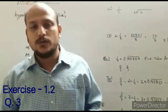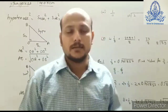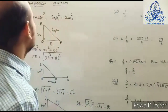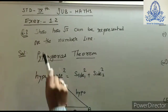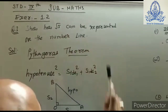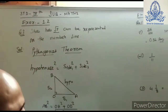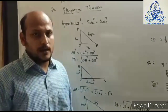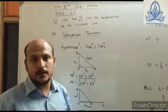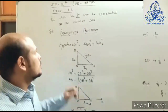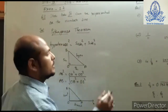Hello friends, today we are going to learn how to represent an irrational number on a number line. In our exercise 1.2, question number 3, we need to show how root 5 can be represented on a number line. Root 5 does not have a perfect answer because it is a non-terminating and non-repeating number — it is an irrational number.